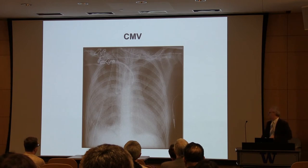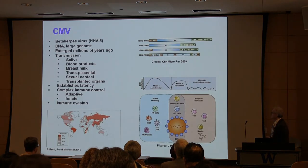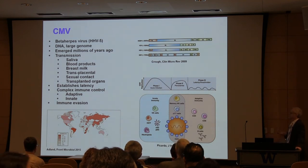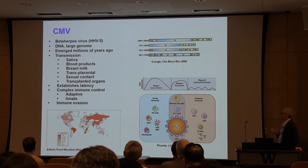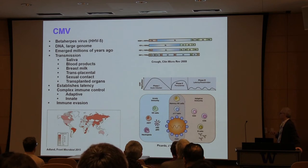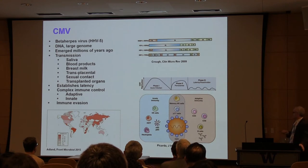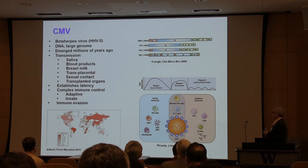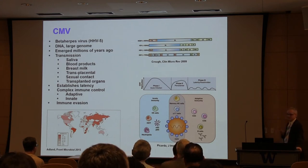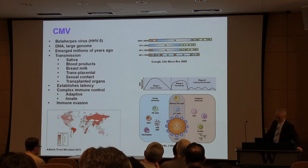CMV can cause a terrifying pneumonia with a high fatality rate. As a brief introduction: CMV is a beta herpes virus, a DNA virus, also called HHV-5, one of the nine herpes viruses. It likely emerged millions of years ago and is transmitted via saliva, blood products, breast milk, transplants, and sexual contact. It establishes latency after an initial phase of infection and has complex immunologic controls — both adaptive and innate — and due to its long co-evolution with mankind, has developed amazing immune evasion mechanisms.